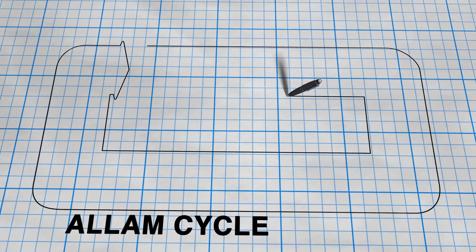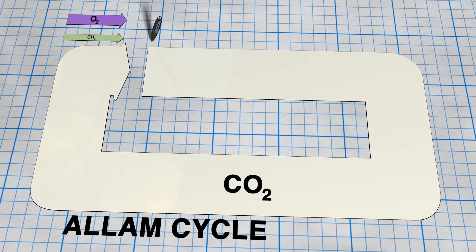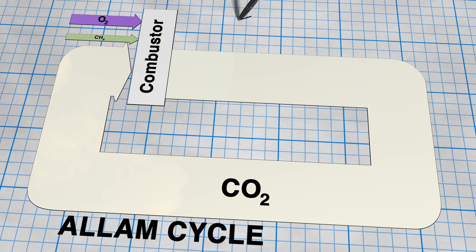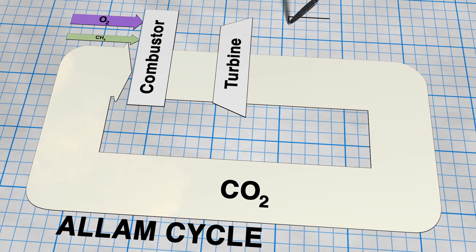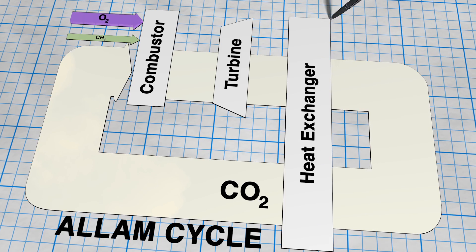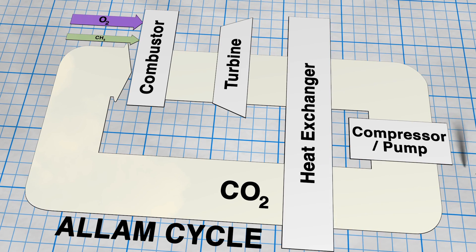NetPower uses supercritical CO2 instead of steam to produce power. Natural gas is combusted with hot, recuperated CO2 and oxygen, preventing NOx production.